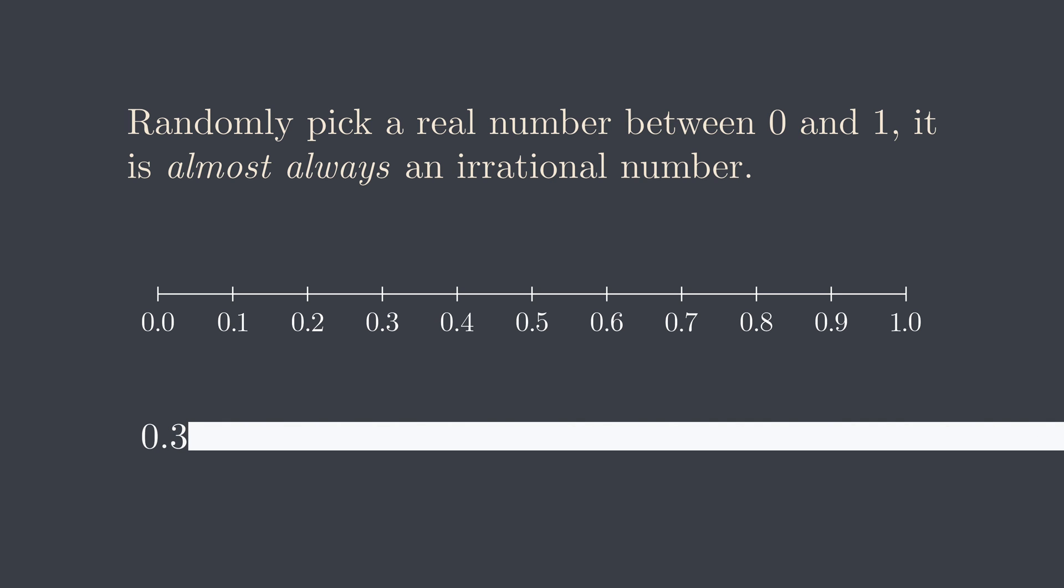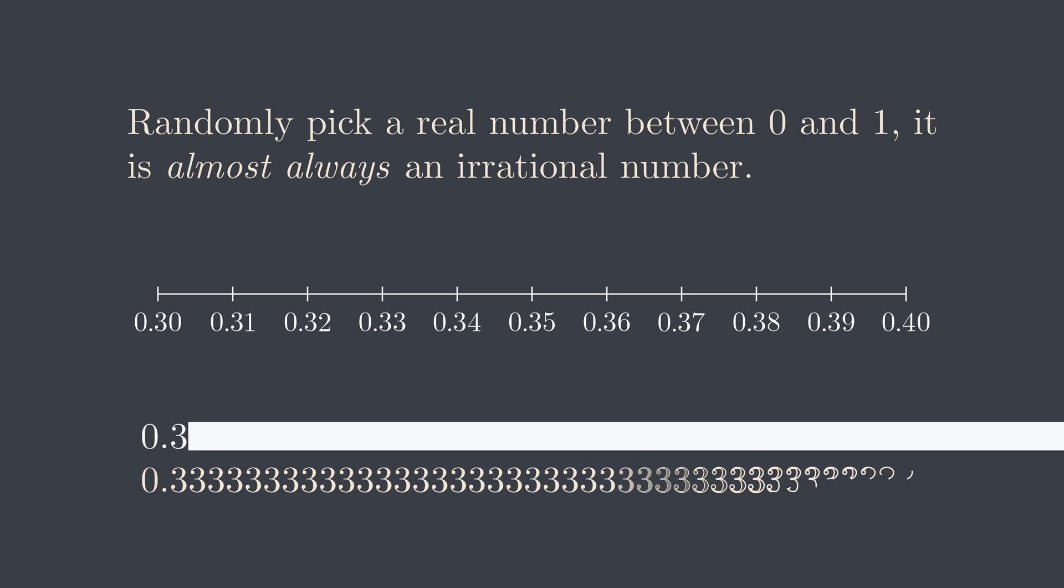Suppose we know the first digit after the decimal point is 3, what information does it provide for determining the rationality of the number? If this number is a rational number and 3 is a repetend, then every single digit after the first 3 must all be 3. Imagine how likely is it? It is very very unlikely.